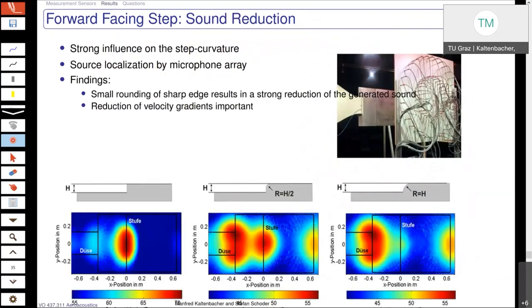So this effect of destroying the strong vortex in front, or with a grid changing the boundary layer from laminar to turbulent, has no strong effect. But the strongest effect clearly will have the geometry of the step itself — especially the curvature. And that we also investigated with our microphone array.